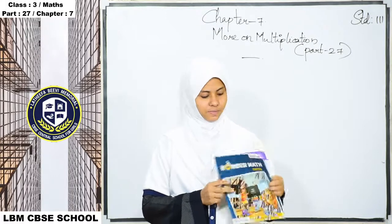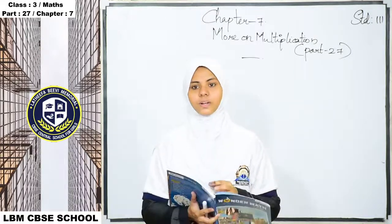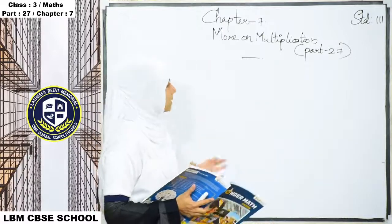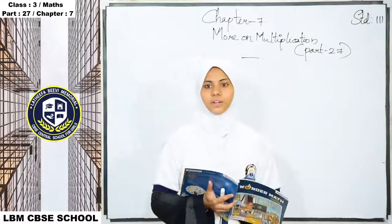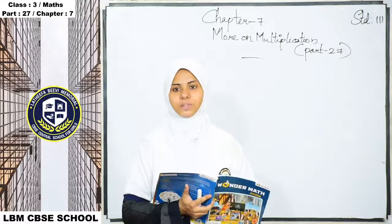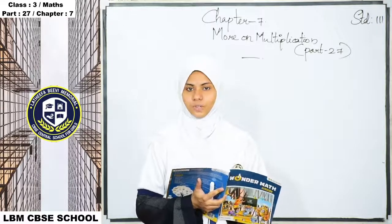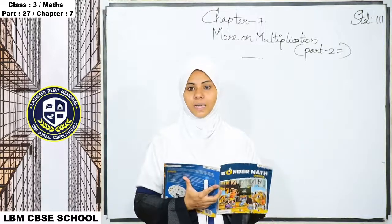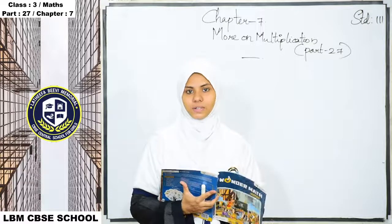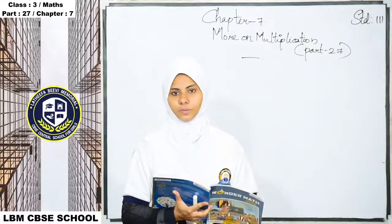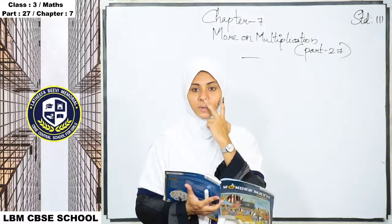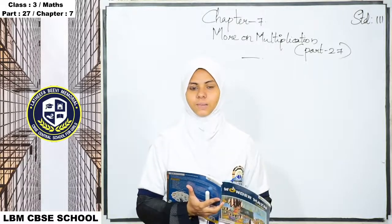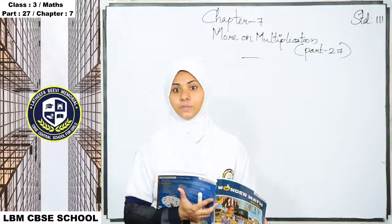Let's start our class. Today we are going to learn a new chapter — chapter 7: More on Multiplication. We are already familiar with multiplication tables 1 to 15, multiplication of 2-digit by 1-digit numbers with and without regrouping, and word problems based on multiplication from our 5th chapter.